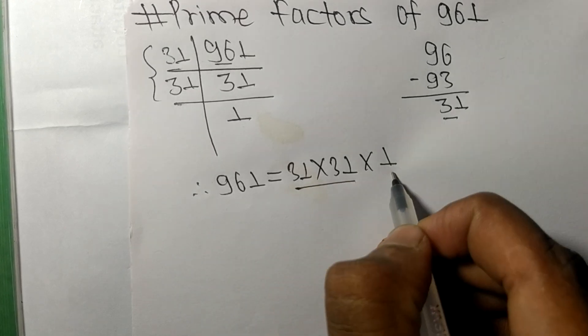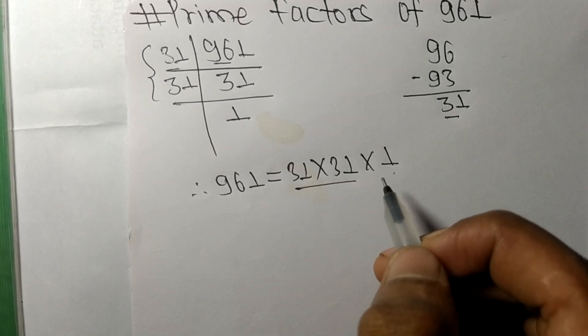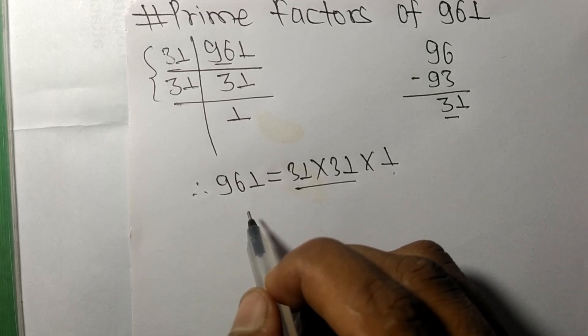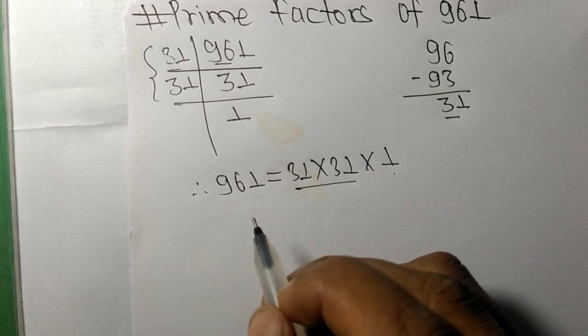So this is 31 and 1 are the prime factors of 961. So this much for today and thanks for watching.